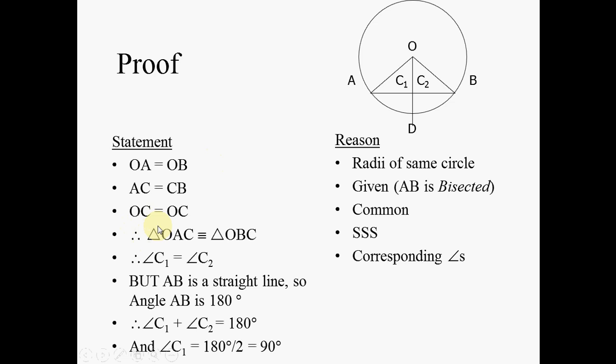And now we say therefore triangle OAC is congruent or equal in every respect to triangle OBC. So this triangle equals that triangle because of side side side congruency. And because this angle and that angle are corresponding angles of congruent triangles they are identical. So angle C1 is the same as angle C2 because they are corresponding angles.